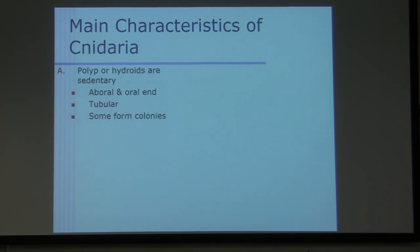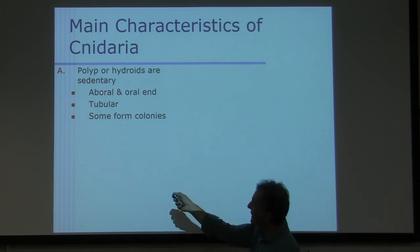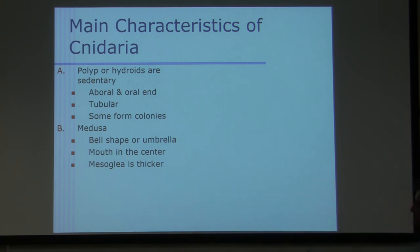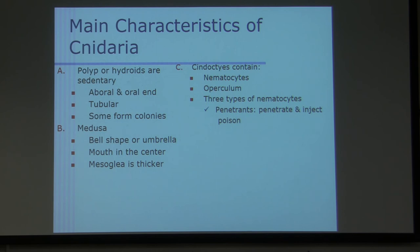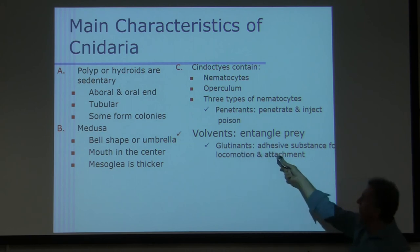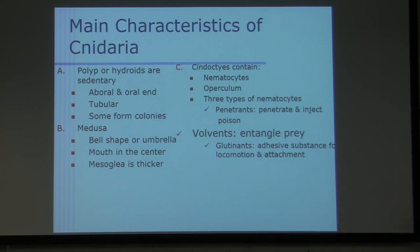Main characteristics of cnidarians, polyp or hydroid. Another name for polyp is hydroid. Sedentary. Aboral, oral, I wish I would have brought my models in here. But medusa, bell-shaped or umbrella-shaped, mouth in the center, mesoglea is thicker. Cnidocytes contain nematocysts, operculum, and three types of nematocysts: penetrant, which penetrates their prey, not their host, the prey. And then, of course, inject poison. Volvent, it means entangle the prey. And the third one is a glutinant for locomotion. They use it as sticky substances for locomotion or attachment.